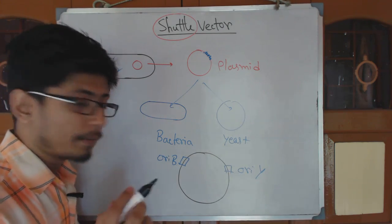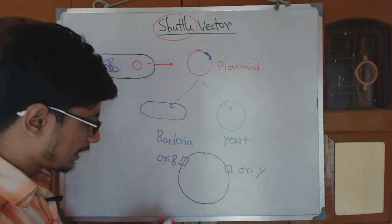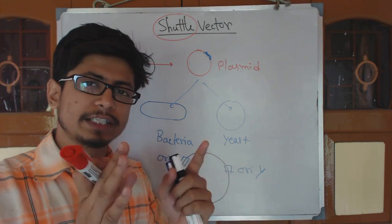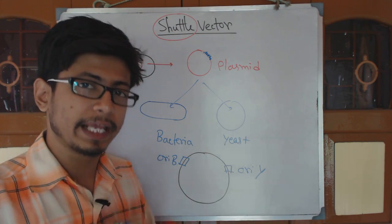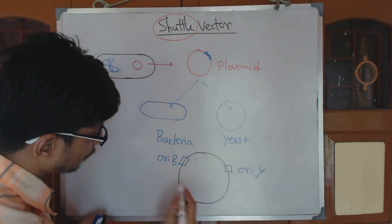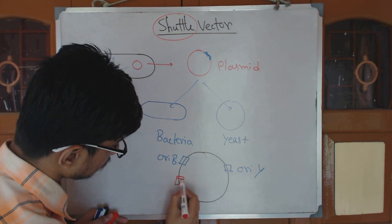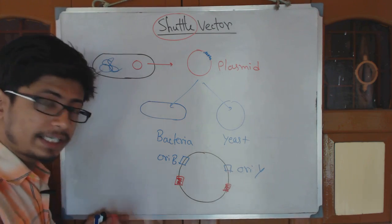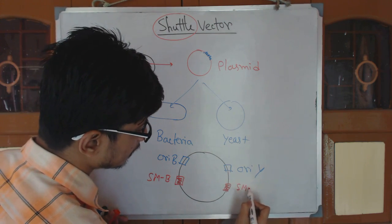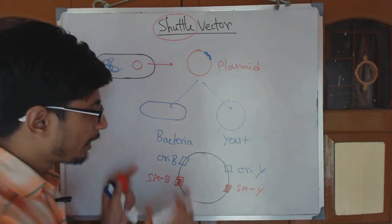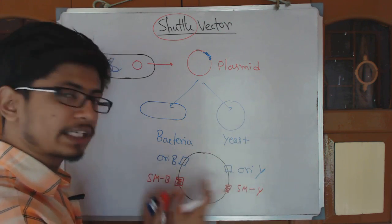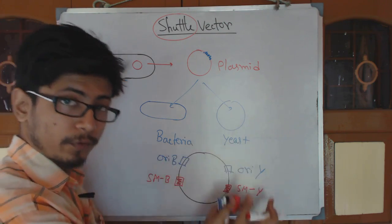Second thing is the selectable marker. Now again the selectable marker is a specific gene sequence, the product of which can help us to identify where exactly our plasmid is present. But again, the selectable marker for bacteria will be different than the selectable marker for yeast. So we have a pair of origin of replication, one for bacteria, one for yeast. A pair of selectable markers, one for bacteria, one for yeast.